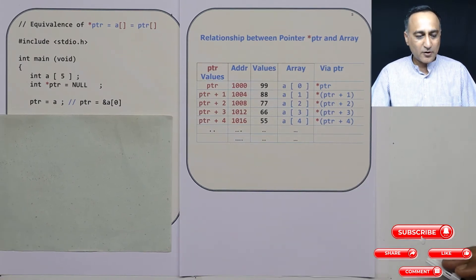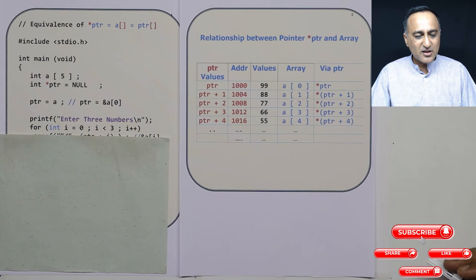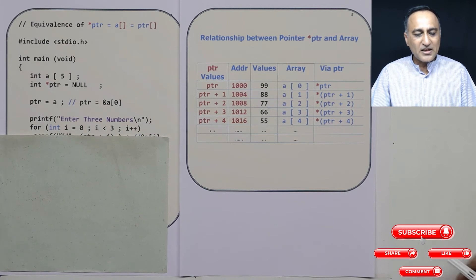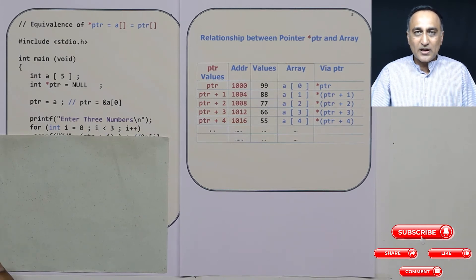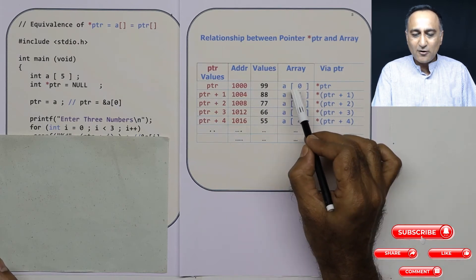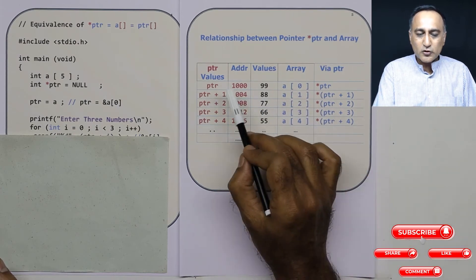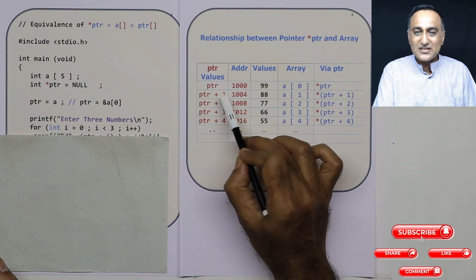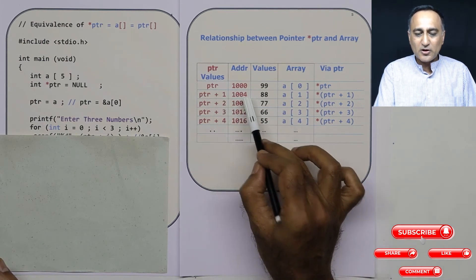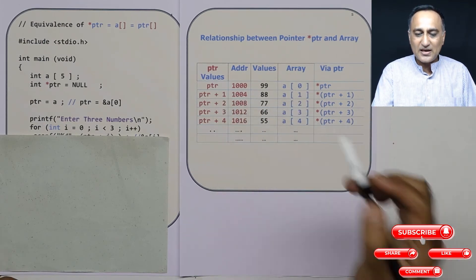I think you must be getting what I am trying to head to. I am asking the user to enter three numbers. Normally when I am reading numbers into an array I say address of a[i], but I can also simply say ptr plus i because ptr is also referring to the same address which a is referring.